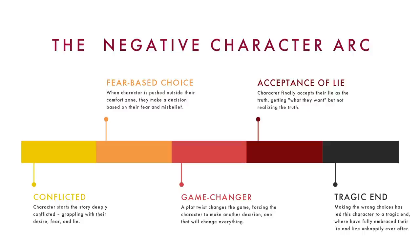The negative character arc consists of five main story beats: the conflicted starting point, the first fear-based choice, the game-changing midpoint, the acceptance of a lie, and the tragic end. You may have heard that there are three negative character arcs — the disillusionment, the corruption, and the fall — but as I explained in last week's video, they all fall under the same overarching structure. And this structure works perfectly with the three-act story structure, which I made a whole super detailed video series on.